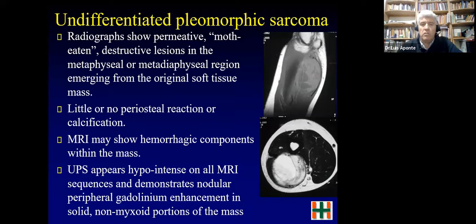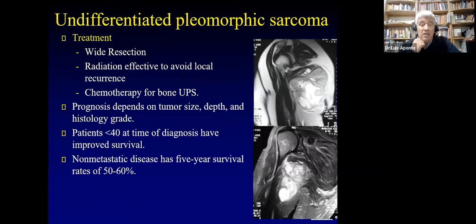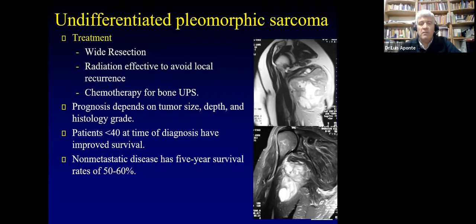Treatment for soft tissue UPS is wide resection plus radiation — radiation is only to avoid local recurrence. Chemotherapy for bone UPS has evidence, but not for soft tissue UPS. Prognosis depends on tumor size, depth, and histologic grade; mitotic activity is very important. Younger patients have improved survival. Survival is unfortunately less than osteosarcoma. You must take the tumor out with a normal cuff of muscle all around, ensuring you cannot see the tumor.